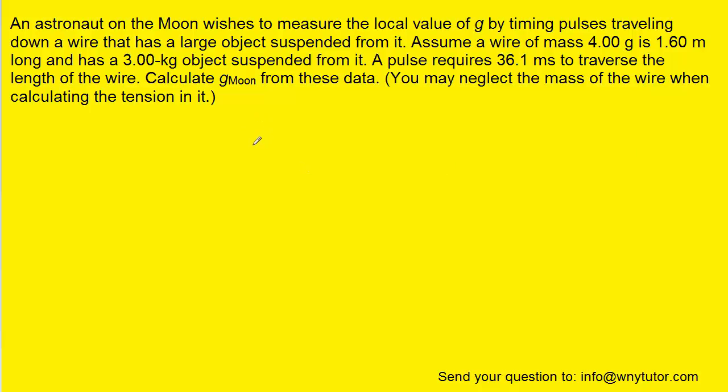We can go ahead and draw a simple picture of this mass as it's hanging from the 1.6 meter string. Not a particularly enlightening picture, but here we have that mass hanging from the string, and we know that the astronaut is sending a pulse down the length of the string.